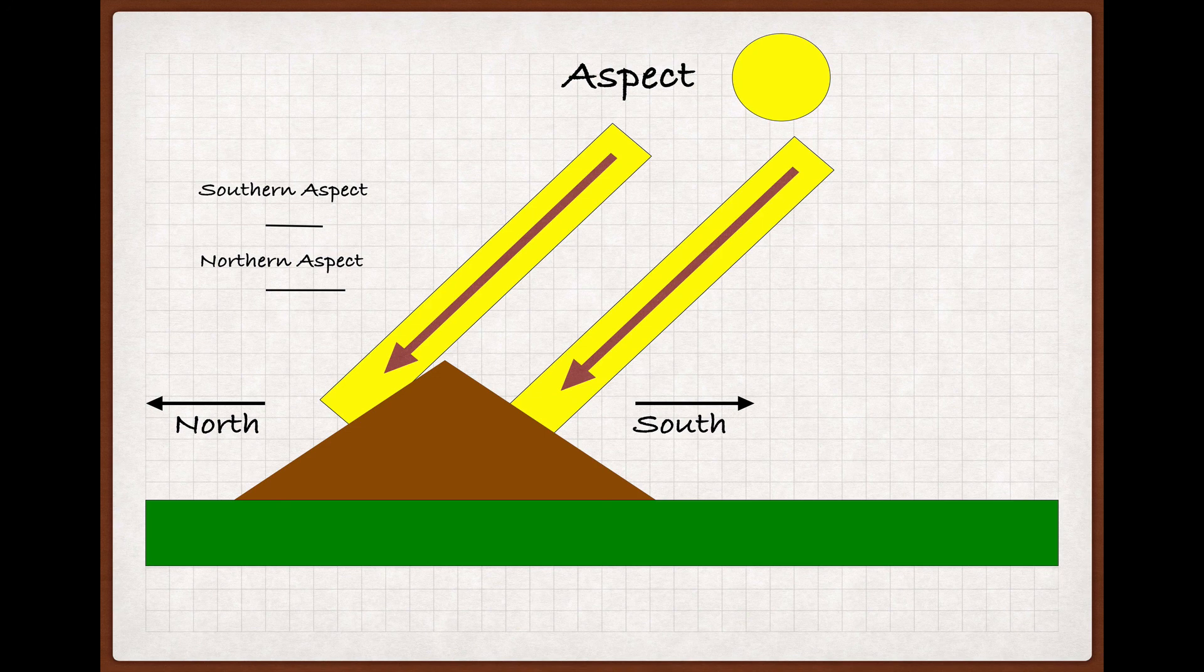But if, for various reasons, a wine grower wants to limit the sun exposure of the grapes she's growing, then northern aspect is the ticket. In the southern hemisphere, all of this flips, and it's the vineyards with northern aspect that are prized for their sun exposure.